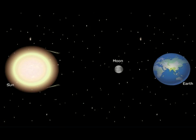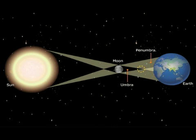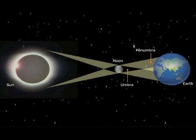When the distance of the Moon from the Earth is such that the tip of the umbra fails to reach the Earth, an annular eclipse occurs and the Sun appears as a ring of light.